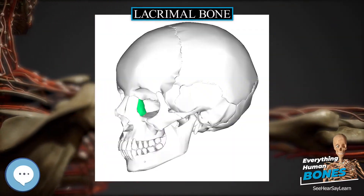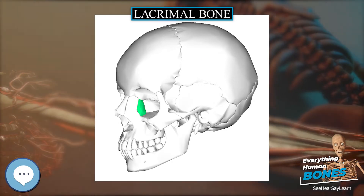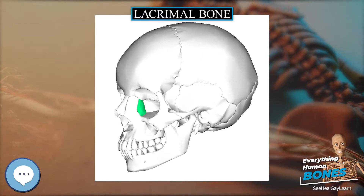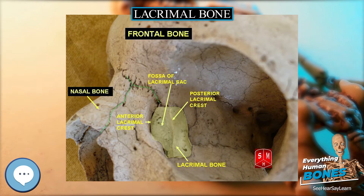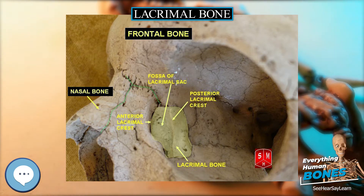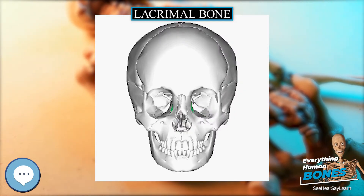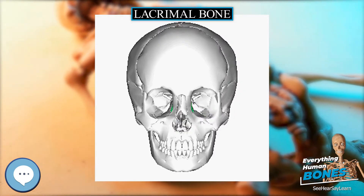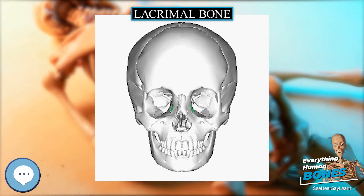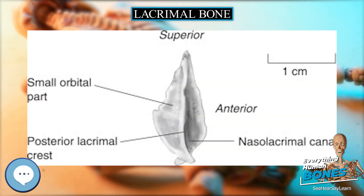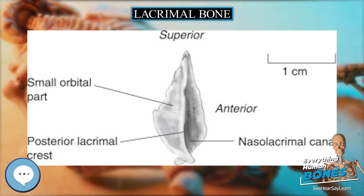The lacrimal bone is a small and fragile bone of the facial skeleton, roughly the size of the little fingernail. It is situated at the front part of the medial wall of the orbit. It has two surfaces and four borders. Several bony landmarks of the lacrimal bone function in the process of lacrimation, or crying.